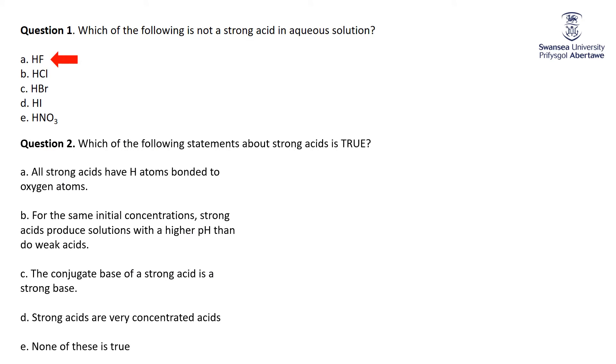Which following statements about strong acids is true? All strong acids have hydrogen atoms bonded to oxygen atoms. Well, we just talked about three that don't: HCl, HBr, HI. For the same initial concentrations, strong acids produce solutions with a higher pH.